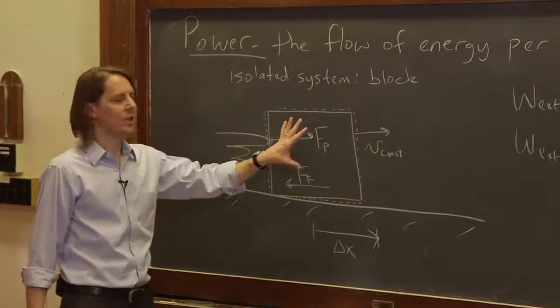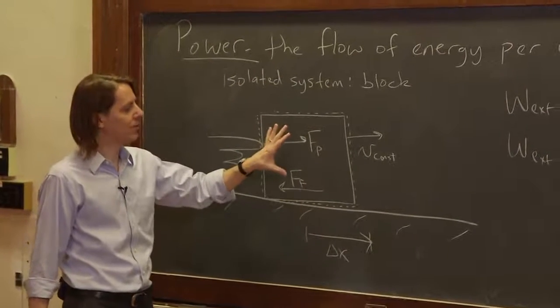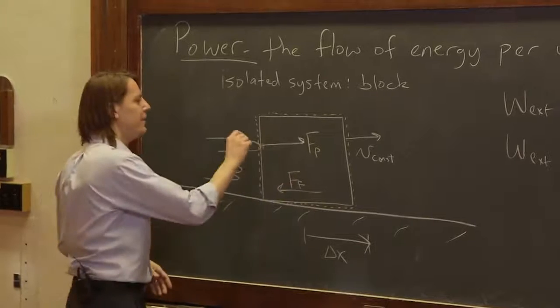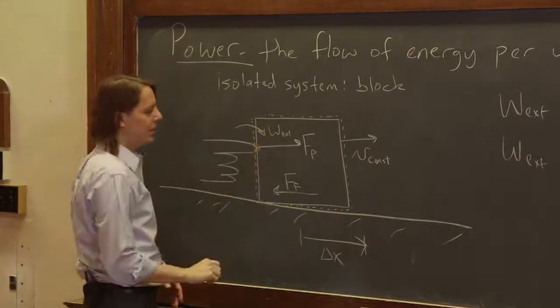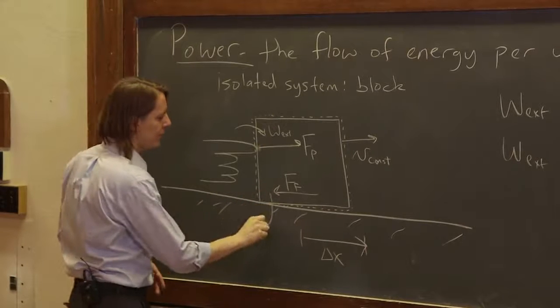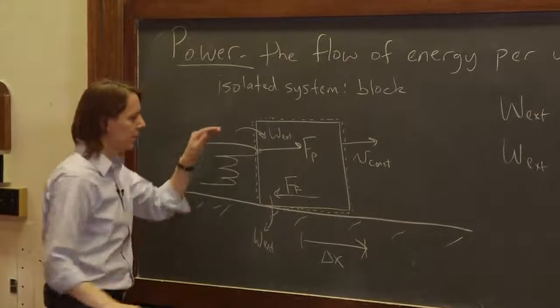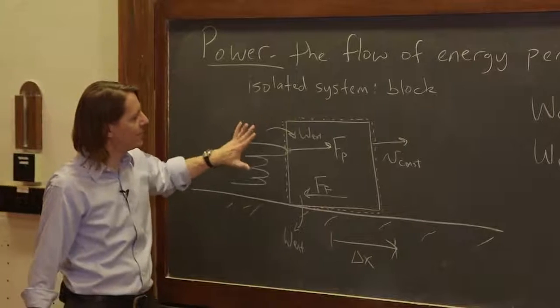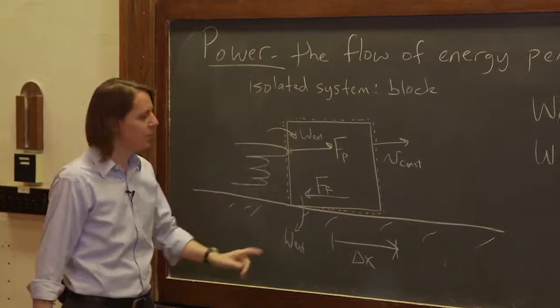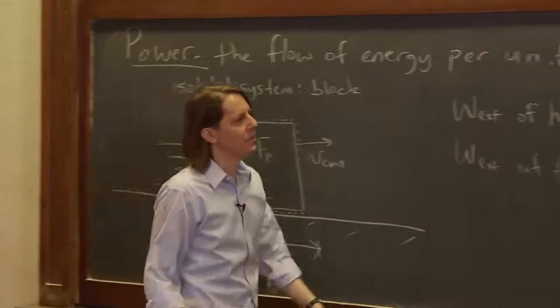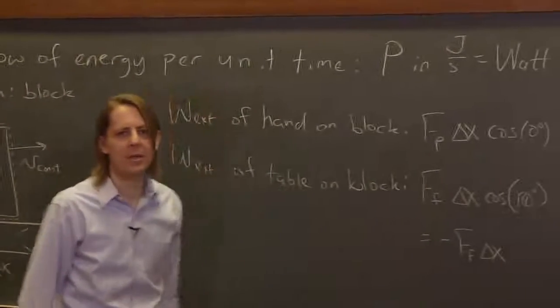What that means is it's losing energy. If there's negative external work, that means the energy is going this way. The finger is having energy come in through work, and the table is having energy go out through work. And you can see they're actually the same. They're both Fp times delta x.